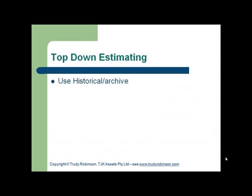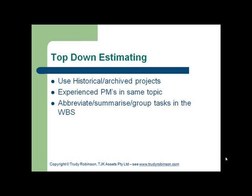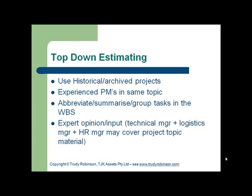Top-down estimating, on the other hand, is the opposite. There has to be some underlying knowledge as to what those costs will be. One of the first points of call for getting that information is from other historical or archived projects and the experience of other project managers. Grouping tasks within the work breakdown structure or Gantt chart allows costs to be grouped together and accumulated at a higher point rather than estimated at a very low level of detail.